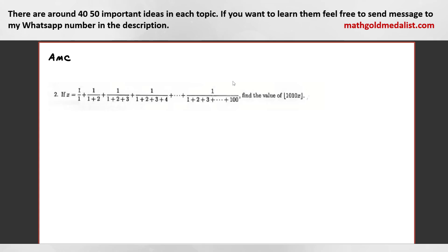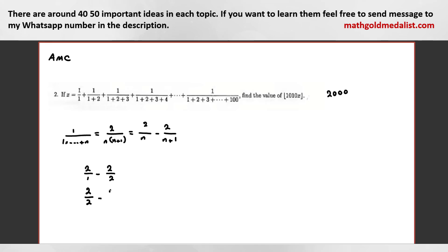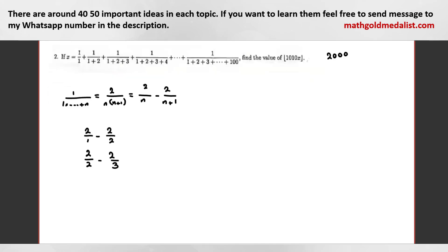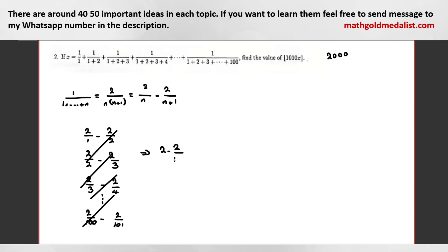Exactly. 2 over n times (n+1). You said your last answer is 2,000? You can say 2 over n times (n+1) equals 2 over n minus 2 over (n+1). So the first term is 2/1 minus 2/2, then 2/2 minus 2/3, then 2/3 minus 2/4, and the last one is 2/100 minus 2/101.